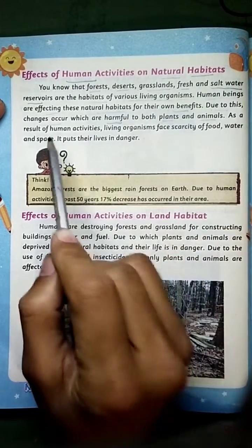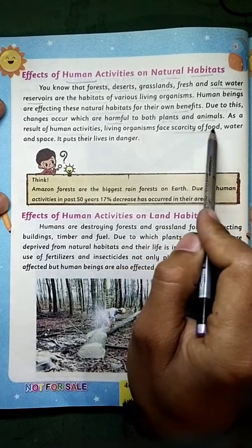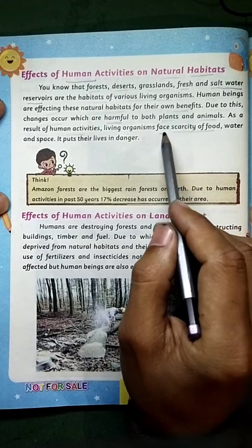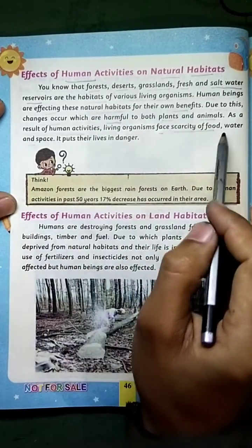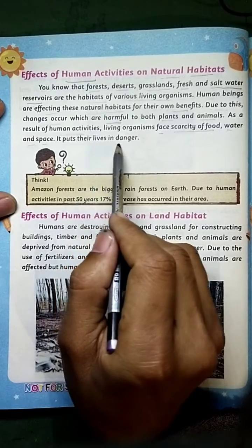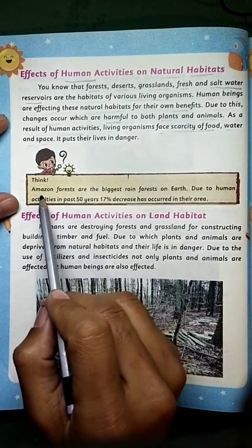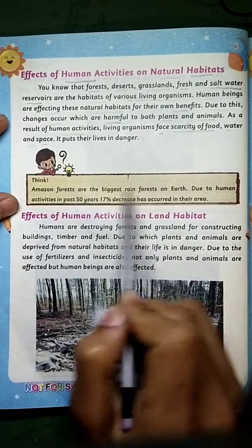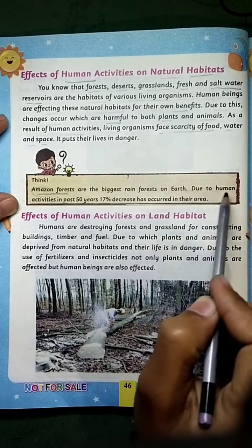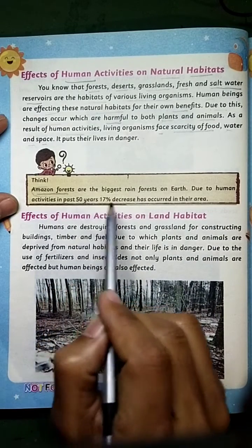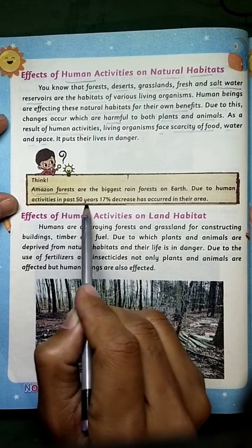As a result of human activities, living organisms face scarcity of food, water, and space, which puts their lives in danger. Amazon forests are the biggest rainforest on Earth. Due to human activities in the past 50 years, a 17% decrease has occurred in this area.